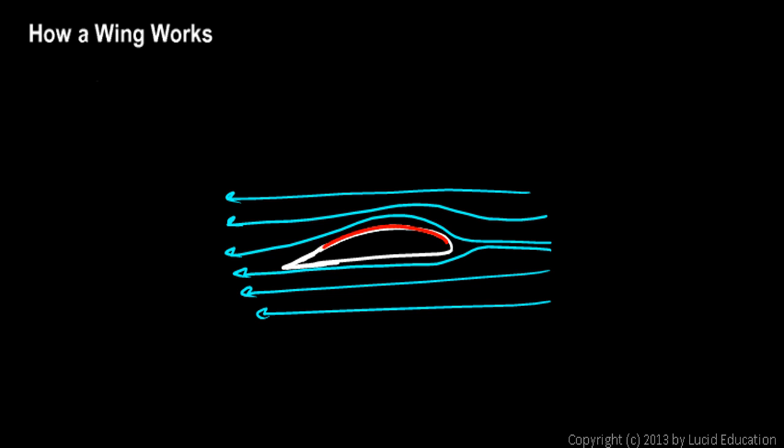It's constricted between the upper curved part of the wing and the air up above it. So you can think of the air in front having a certain amount of space to flow through, and then when it's on top of the wing it has a smaller amount of space to flow. This constriction of the air causes it to flow faster.